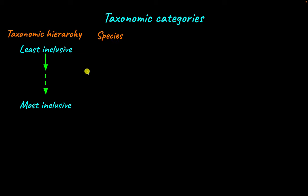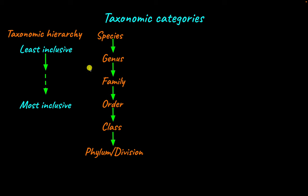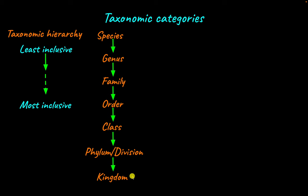The taxonomic ranks are: species, genus, family, order, class, phylum for animals and division for plants, and kingdom. Species is the least inclusive category while kingdom is the most inclusive. Organisms classified in the same species share the maximum number of common characters, while two organisms in the same kingdom share the least number of common characters.